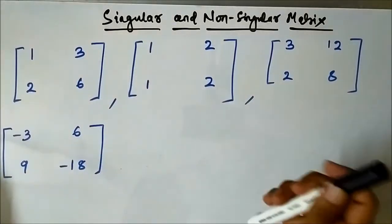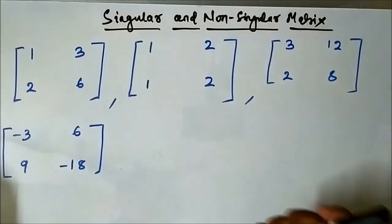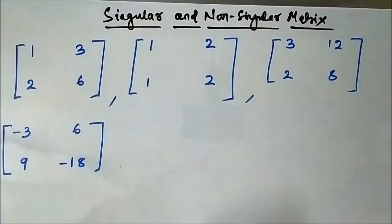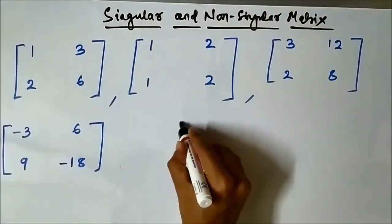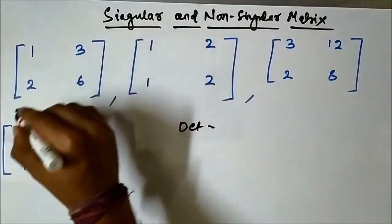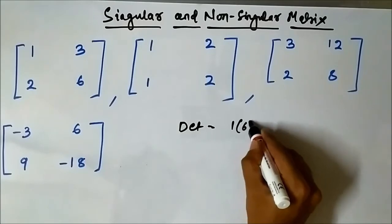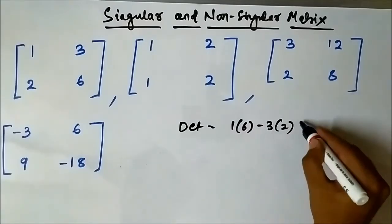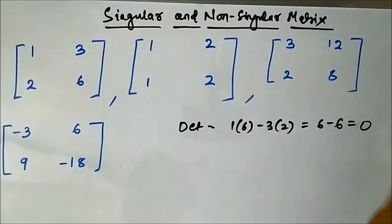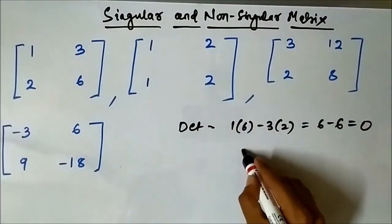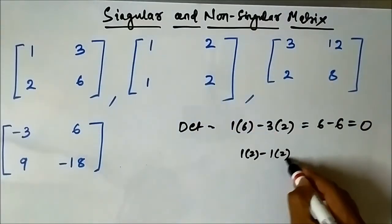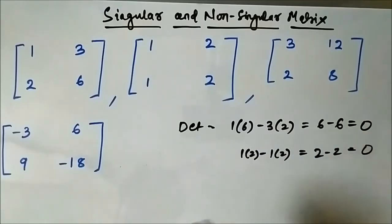These are some examples of singular matrices of order 2, as you can see here. As you can calculate just by looking, the determinant values of these matrices are 0. For the first matrix, the determinant value will be 1×6 minus 3×2, which is 6 minus 6, equals 0 — so it is singular. For the second one, it is simply 1×2 minus 1×2, which is 2 minus 2, equals 0.